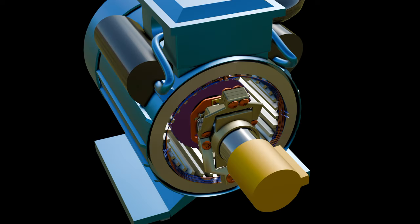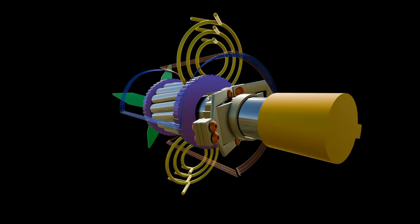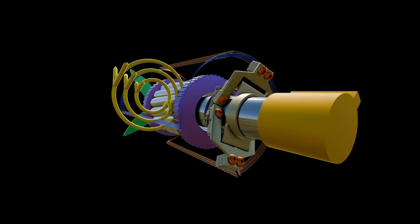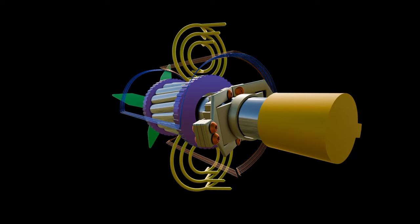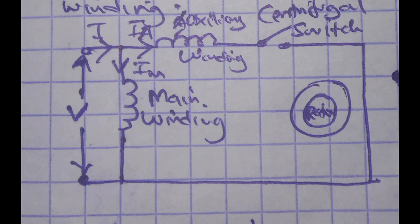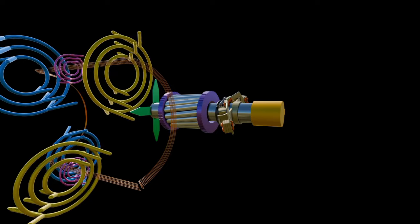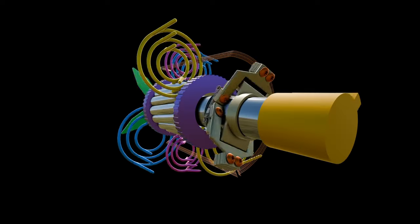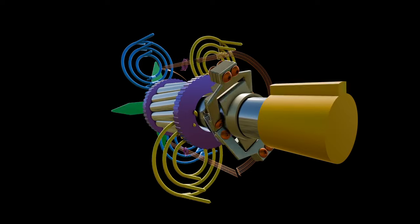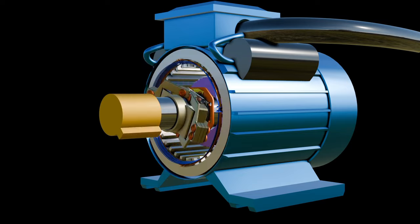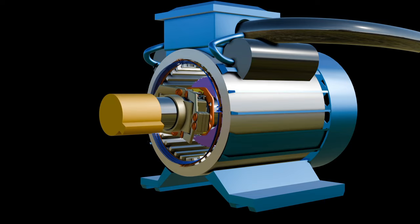Hence, the starting torque of this motor is poor. So, this motor is used in low starting torque appliances like a fan, blower, grinder, pumps, etc. Centrifugal switches are connected in series with auxiliary winding. Auxiliary windings are only used to start the motor. This winding is not useful in running condition. When the rotor reaches 75-80% of its synchronous speed, the centrifugal switch opens. So, the auxiliary winding is out from the circuit. And the motor runs on only main winding.